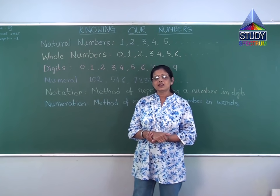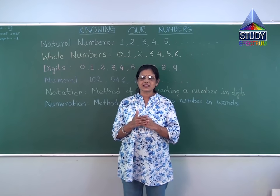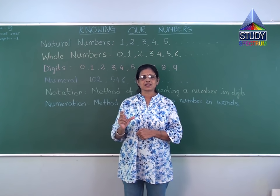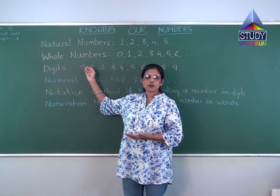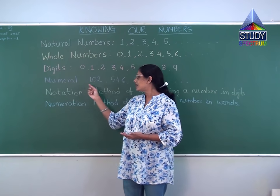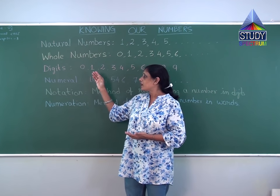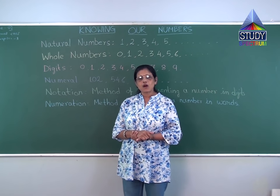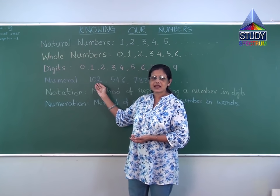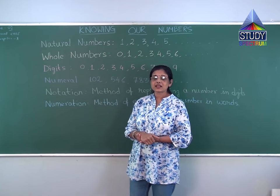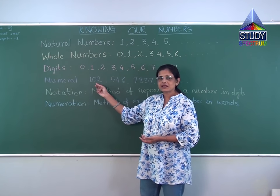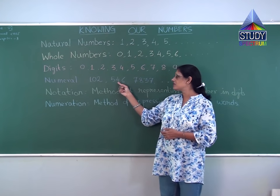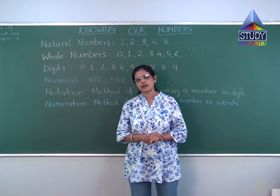Now, numeral. Numeral means when you combine digits and frame a number — two digits, three digits, five digits, seven digits — made from the digits zero to nine. Whatever you form is called a numeral or number. You can put any digits in any place to form a number, but numerals cannot start with zero. Zero can be in the middle or end, any place, but not at the start. For example, 546, 7837 — any number made from the digits.